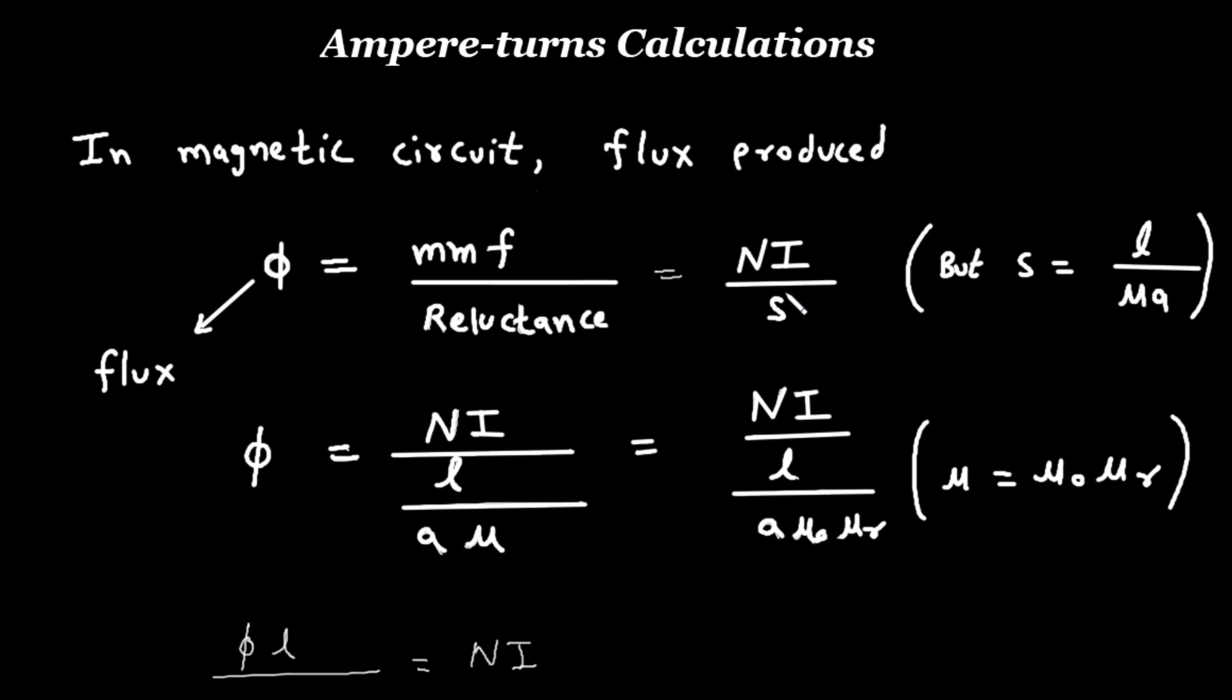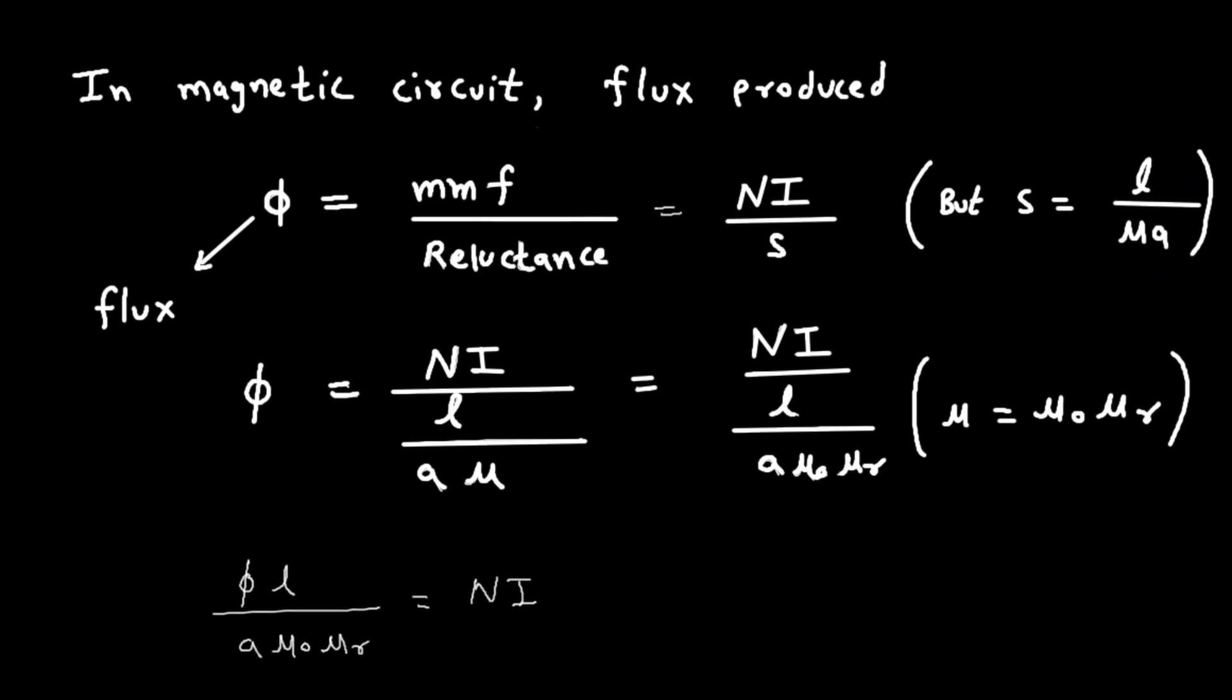Now we know that reluctance s equals l upon mu into a. Here l is the length, mu is the permeability, and a is the area.